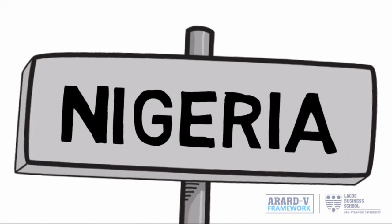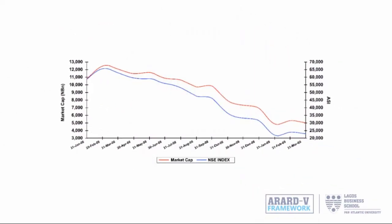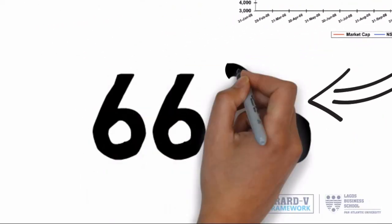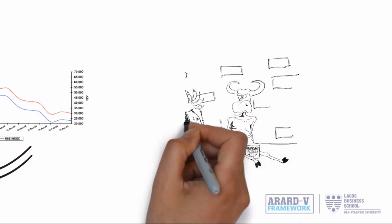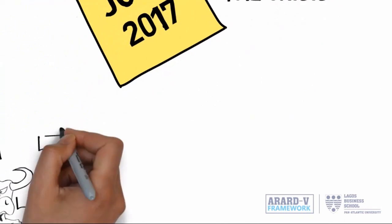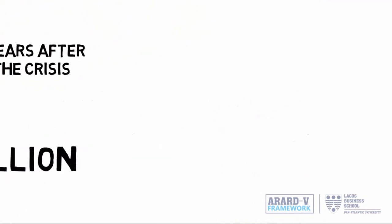In Nigeria, the unethical financial practices in the banking sector led to the crash of the capital market. Between March 2008 and April 2009, the market capitalization dropped from a peak of over 13.3 trillion naira to 4.5 trillion naira, a loss of over 66 percent in value. This created severe hardship for investors and a lack of trust in financial markets. By June of 2017, nine years after the crisis, market capitalization hovers at about 11.4 trillion naira, a far cry from its peak.